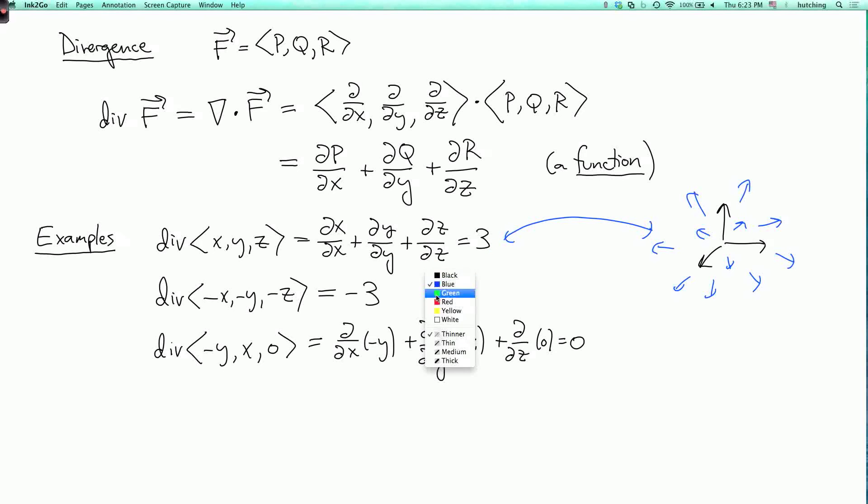The second example, let's do it in green. So here, it's pointing towards the origin. And the further away from the origin you are, the bigger its magnitude is. So it looks like somebody's putting a vacuum cleaner at the origin and sucking everything up.